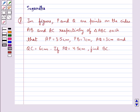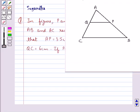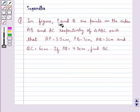Hello and welcome to the session. In this session we discuss the following question. In the figure, P and Q are points on the sides AB and AC respectively of triangle ABC such that AP equals 3.5 cm, PB equals 7 cm, AQ equals 3 cm, and QC equals 6 cm. If PQ equals 4.5 cm, find BC.